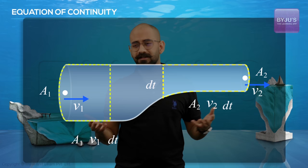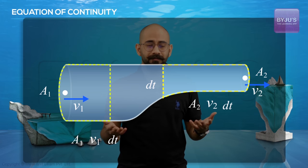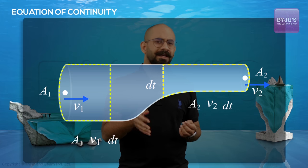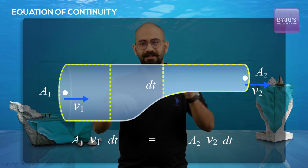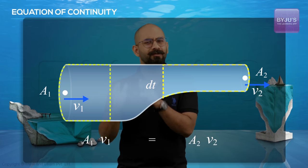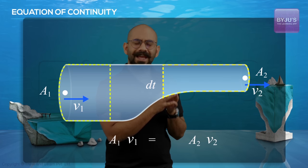By conservation of mass, we know the volume will be the same. Therefore A1V1dt should equal A2V2dt. If I cancel out dt on both sides, I get A1V1 equals A2V2.